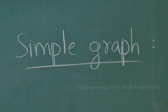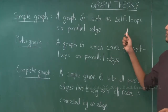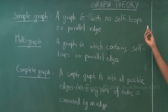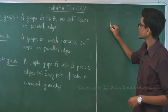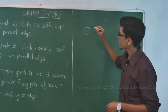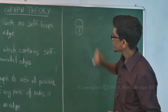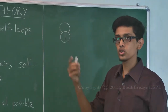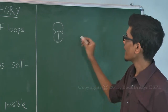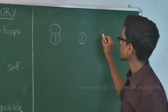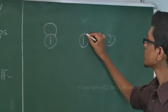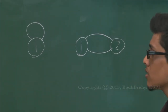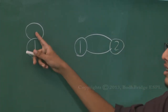A simple graph is a graph G with no self-loops or parallel edges. A self-loop is when there is an edge from a vertex back to itself — for example, an edge from vertex 1 to vertex 1. In a simple graph such self-loops should not exist. A parallel edge is when there are two different edges between the same two vertices, say between vertices 1 and 2. So a simple graph should not have self-loops or parallel edges.